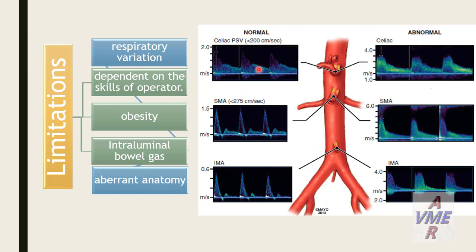The picture shows normal peak systolic velocity for the celiac trunk, normally less than 200 cm/s, and superior mesenteric artery less than 275 cm/s. If we have values above 200 and 275 cm/s respectively, it predicts more than 70% stenosis. Limitations of duplex include respiratory variation, operator dependency, obesity, intraluminal bowel gas, and variant anatomy.